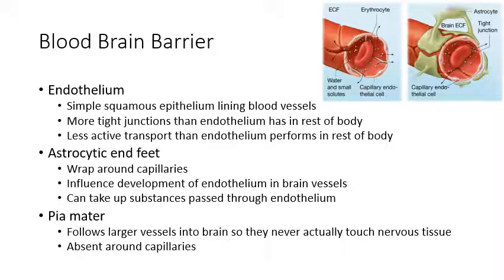Instead, they use L-DOPA, which is the precursor for dopamine. Because it's a precursor, it is specifically transported across the blood-brain barrier by the endothelial cells. L-DOPA is taken into the brain, and whatever dopamine neurons the person has left can use it to synthesize dopamine, making up for the dopamine cells that died. The problem is that once all dopamine neurons are dead, there aren't any neurons left to use L-DOPA to make dopamine, so the treatment no longer works.